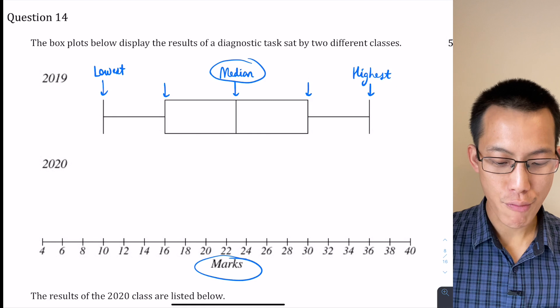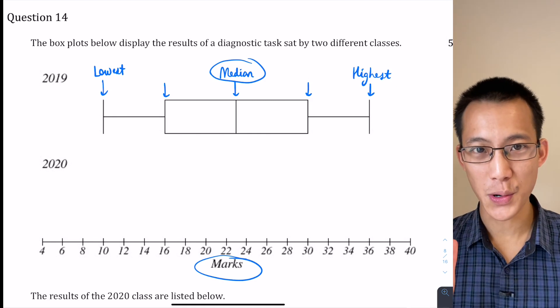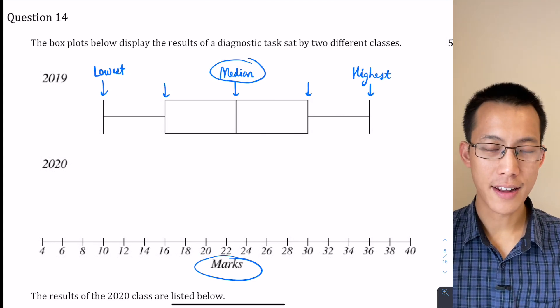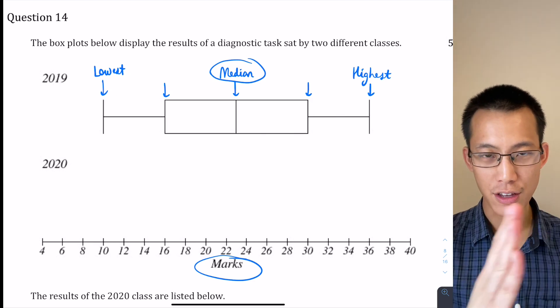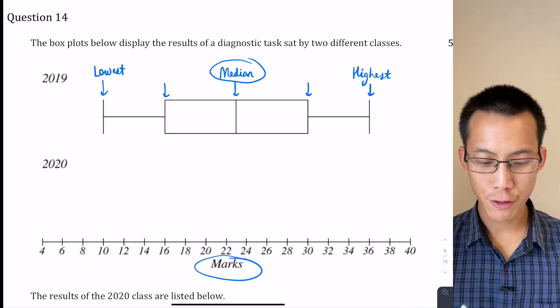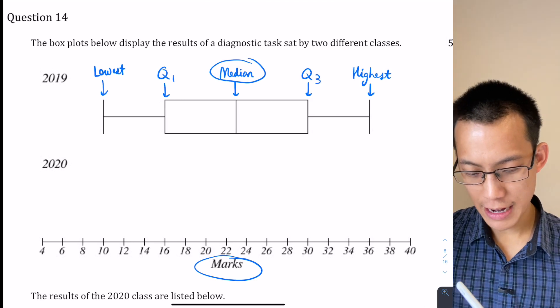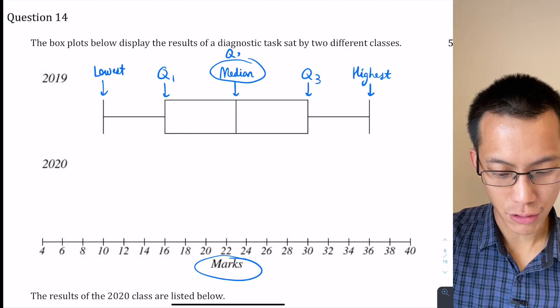Now the median breaks up your entire set of scores into two equal sections. So if you had a hundred students, then the score would break your top 50 and your bottom 50 into two different groups. But these quartiles we call them Q1 and Q3, because the median is Q2.